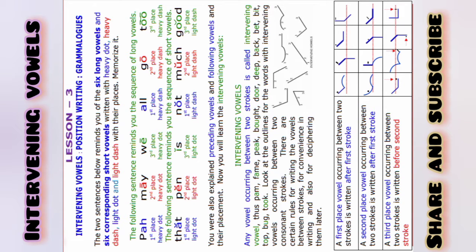Next, the third place vowel occurring between two strokes is written before the second stroke, as shown in the figure.